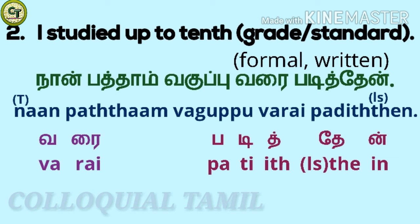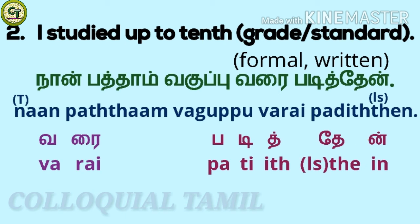If you want to say 'I studied up to 10th grade or 10th standard,' you say 'naan patthavadhu vaguppu varay paditheen.' This is in formal written form. 'Varay' means 'up to,' and 'paditheen' means 'studied.' So: 'naan patthavadhu vaguppu varay paditheen.' Likewise, for 12th standard: 'naan patthavadhu vaguppu varay paditheen.'